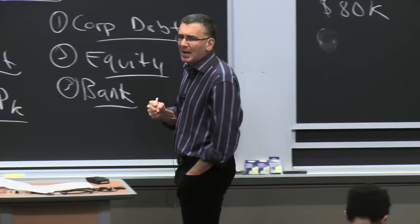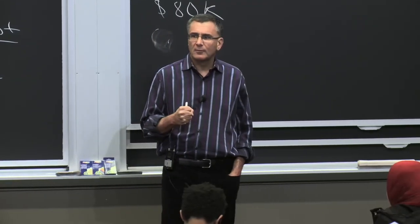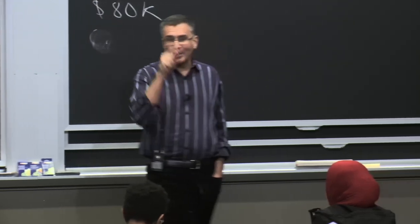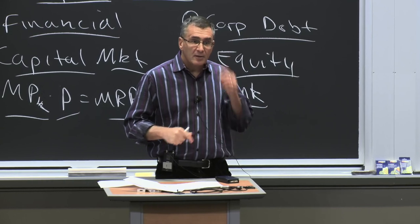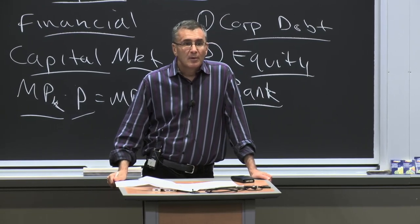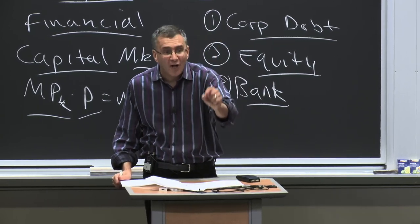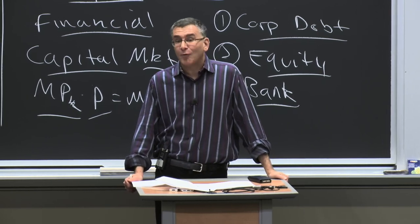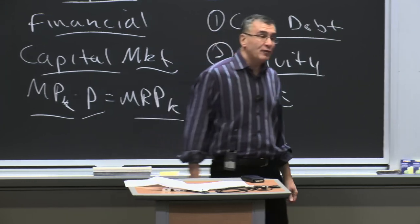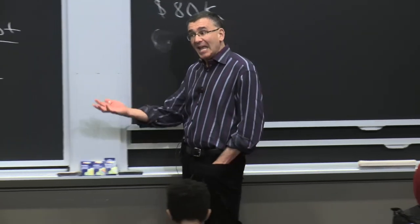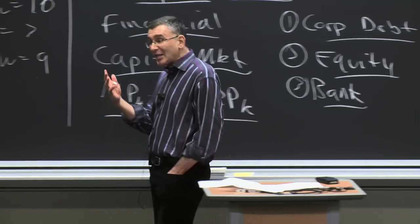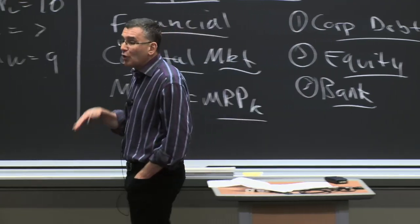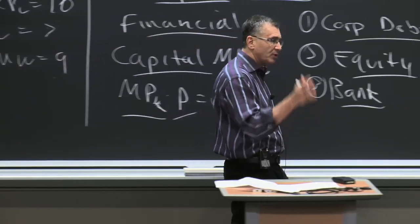In the labor case, the price of leisure was the wage, because that's the opportunity cost of not working. By the same logic, the price of consuming today is (1 plus i) — the opportunity cost. For every cookie you consume today, you forgo (1 plus i) cookies tomorrow. That's the budget constraint: the slope is the opportunity cost of consuming today in terms of tomorrow's consumption, which is (1 plus i). Then we decide using the utility function, which is a function of C1 and C2 — consumption this period versus next period.